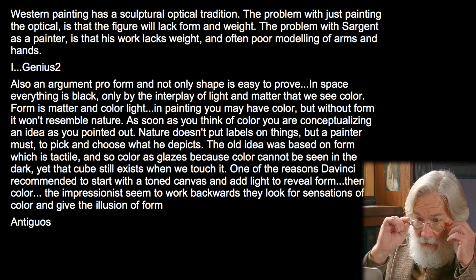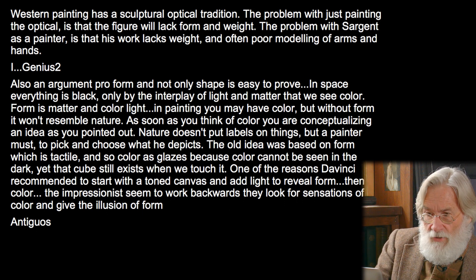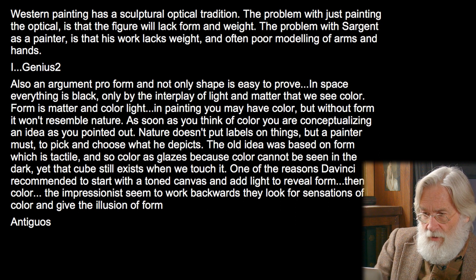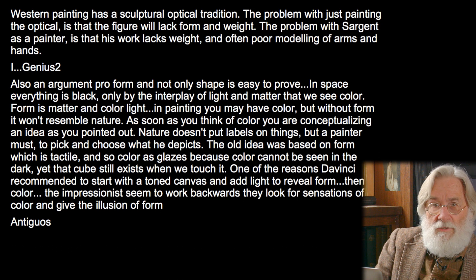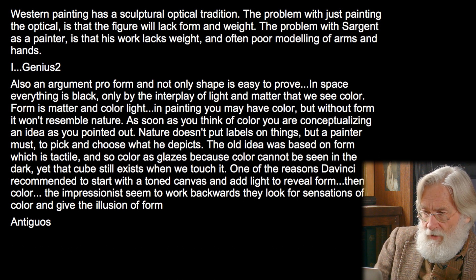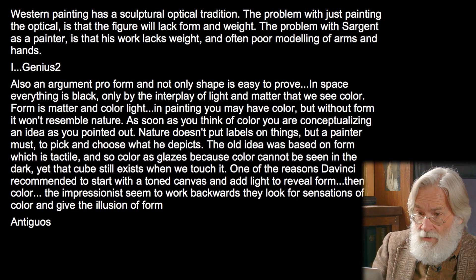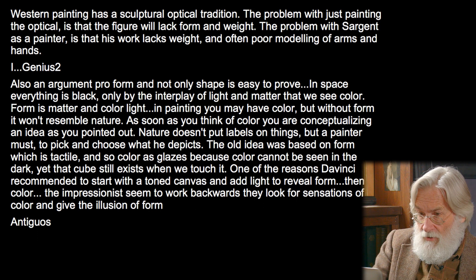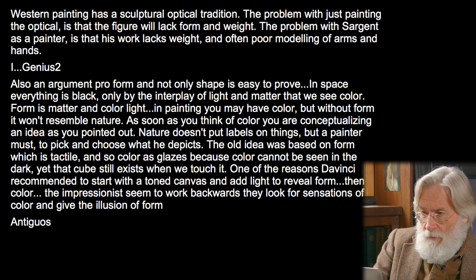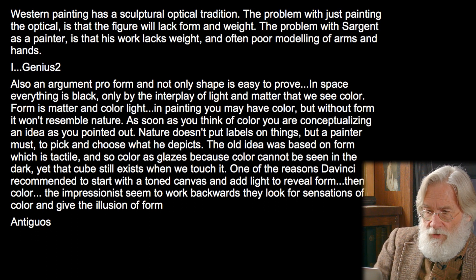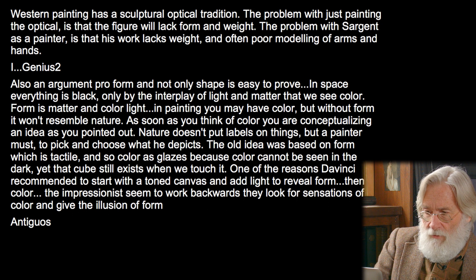As soon as you think of color you are conceptualizing an idea. As you pointed out, nature doesn't put labels on things, but a painter must pick and choose what he depicts. The old idea was based on form, which is tactile — color as glazes, because color cannot be seen in the dark; that cube still exists when we touch it. One of the reasons da Vinci recommended starting with a tone canvas, adding light to reveal form, and then color.